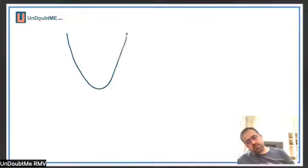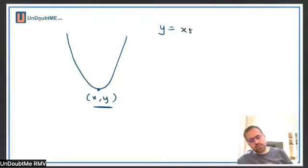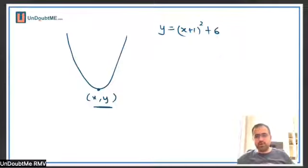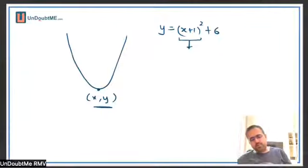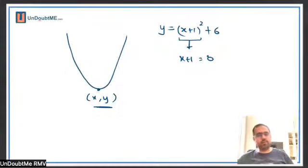The vertex value is of the type x comma y. I'll use the previous example: y equals x plus 1 whole square plus 6. The vertex will be obtained when x plus 1 equals 0. The ultimate aim of completing the square is that you should be able to find the vertex of the parabola. The y value of the vertex gives the minimum or maximum value.